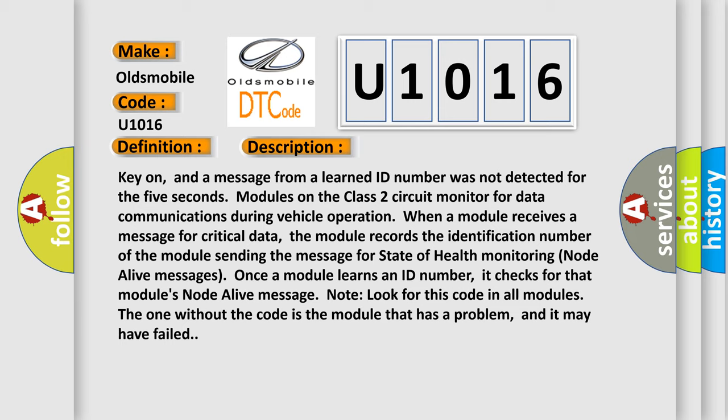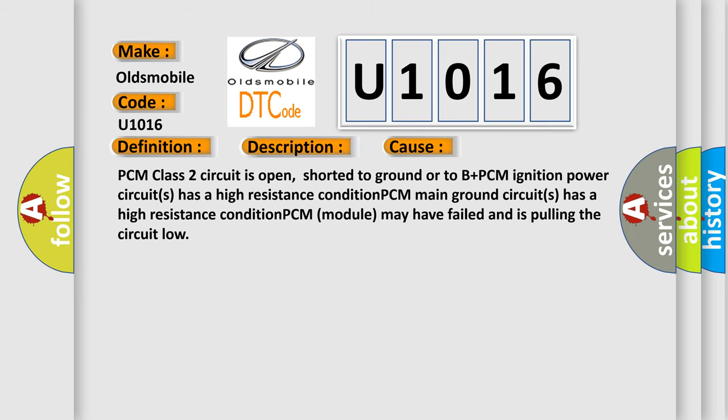This diagnostic error occurs most often in these cases: the PCM class two circuit is open, shorted to ground or to B plus; the PCM ignition power circuit has a high resistance condition; or the PCM module may have failed and is pulling the circuit low.